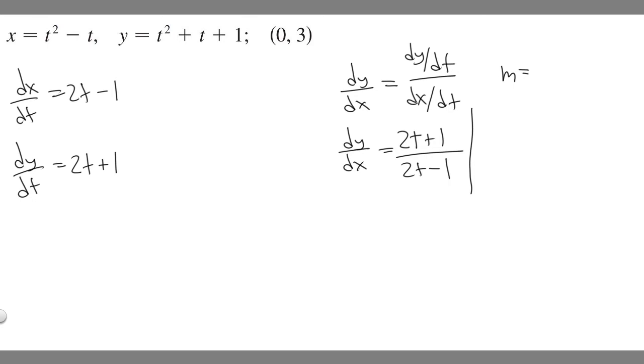You're going to set it equal to our equation, and we can solve for t from that, because we know x is going to be 0 when t is whatever. So let's go ahead and do that. You can choose either one. I'm going to choose this one because it's easier. So just plug in 0 for x. So 0 equals t² - t.